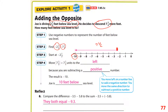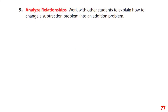An important comparison: subtracting 3.5 minus 5.8 gives the same answer as negative 3.5 plus negative 5.8 — both equal negative 9.3. This illustrates that subtraction can be rewritten as addition of the opposite.